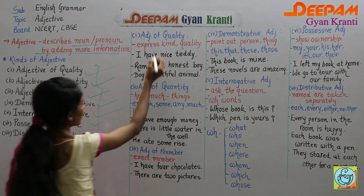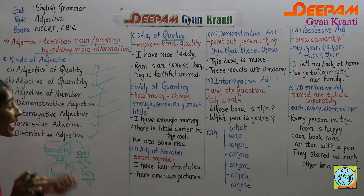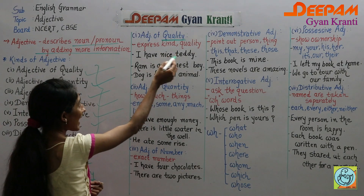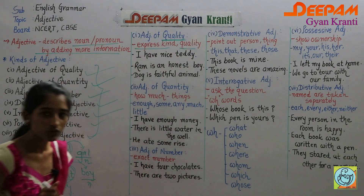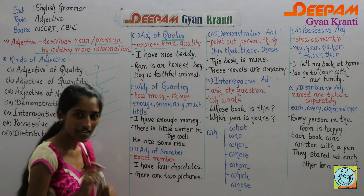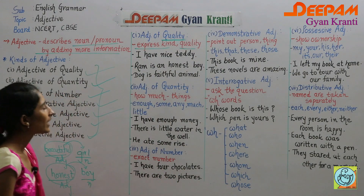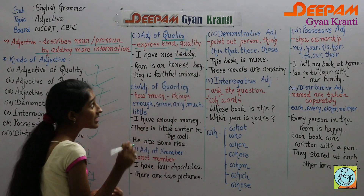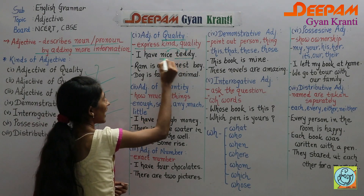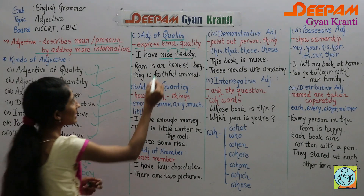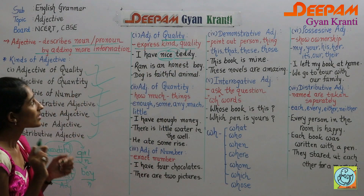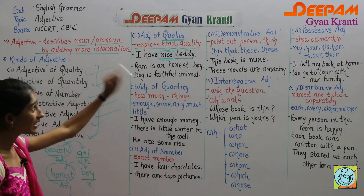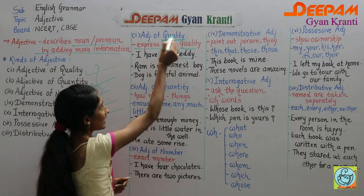The first kind is adjective of quality. When you read the word 'quality,' you get the idea that these words tell us about the quality of a noun or pronoun. For example, 'nice teddy' — here 'teddy' is the noun, and 'nice' is the adjective of quality. If asked in an exam to find the adjective and its kind, you should write 'adjective of quality.'